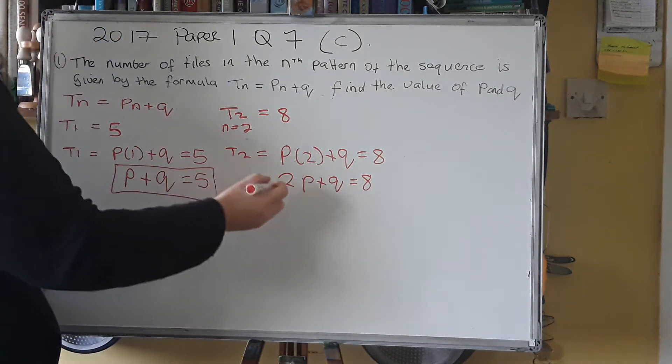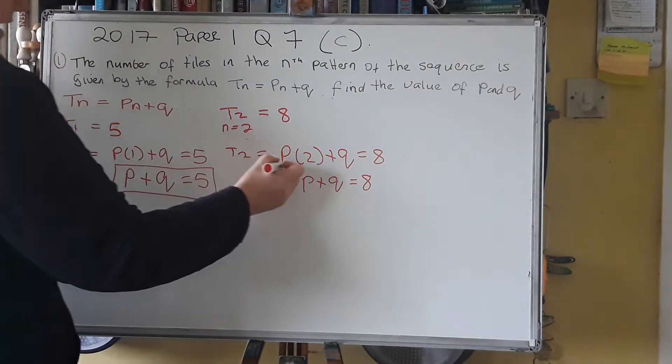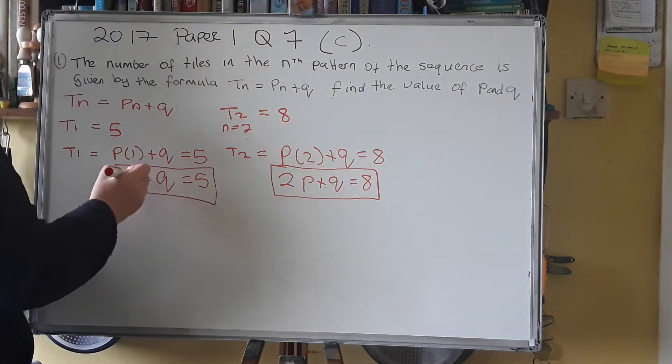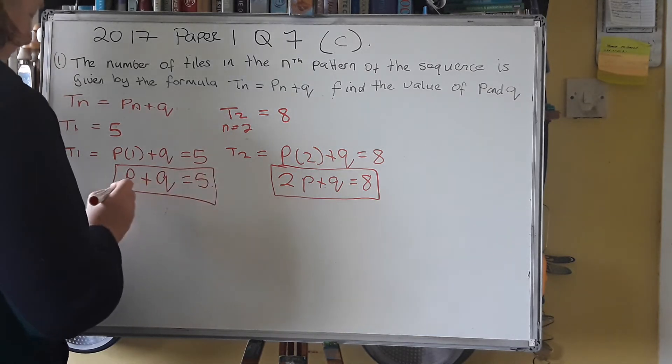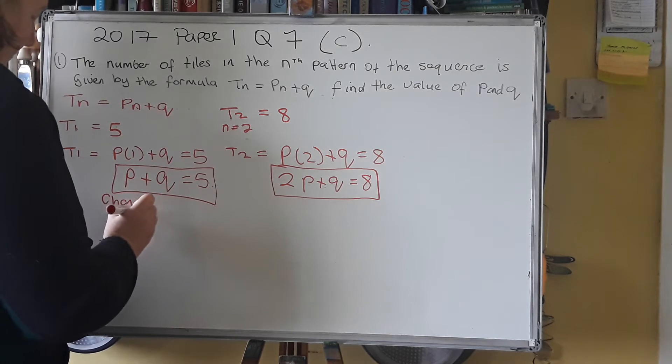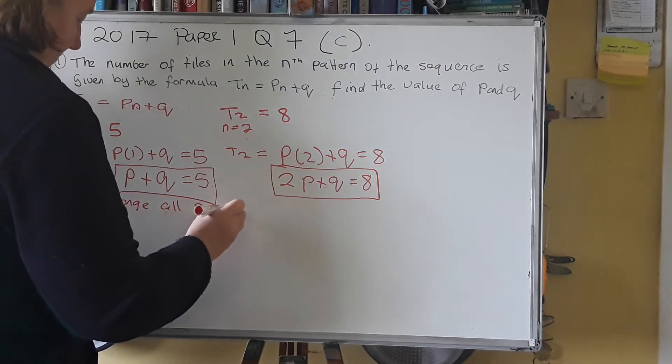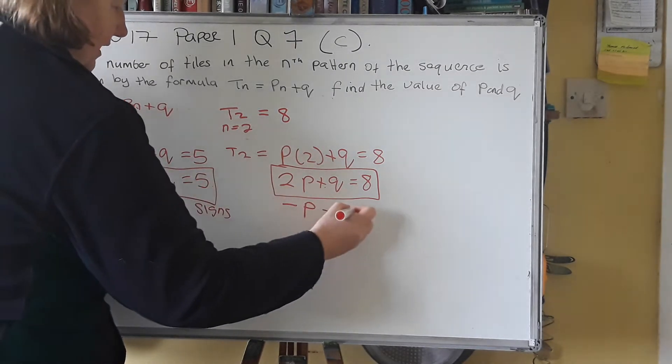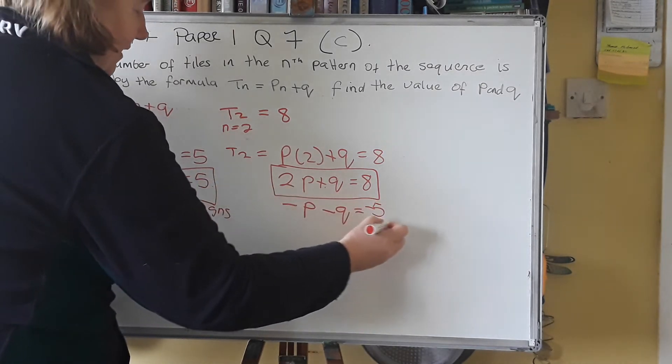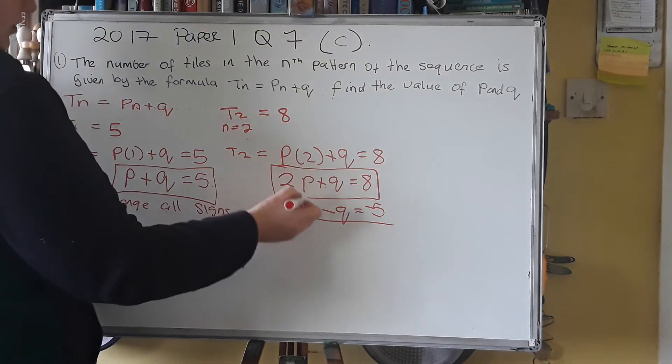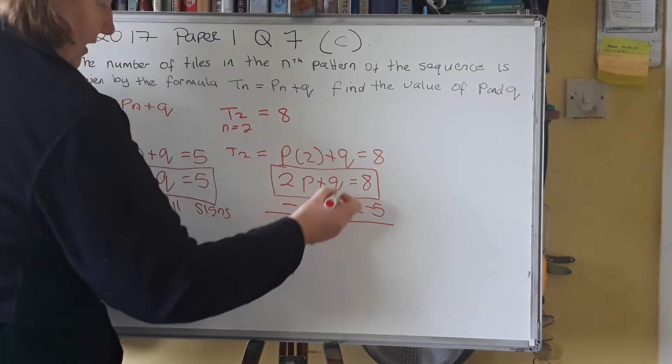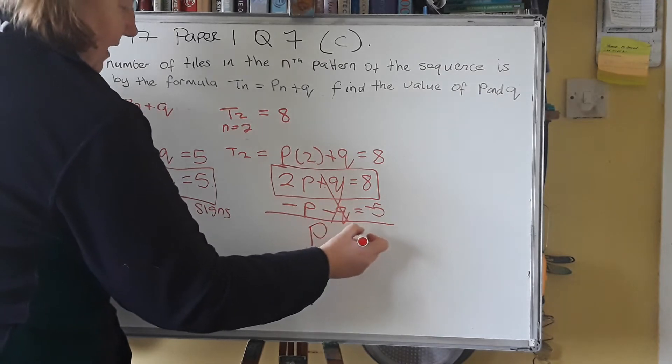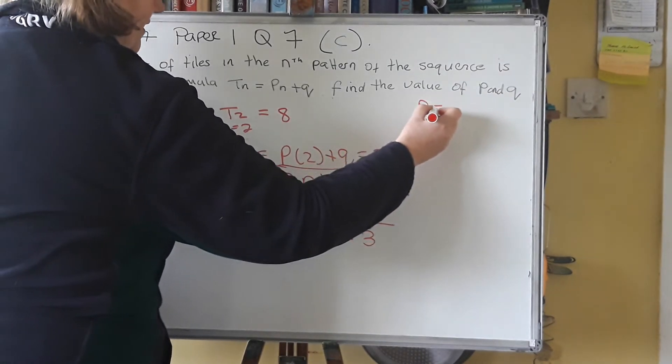Now I want to combine these, but I want to get rid of the Q's. So I have a plus Q there, and I have a plus Q here. So with this one here, the one that has no number with the P and has the smaller number here, I'm going to change all the signs. So P becomes minus P, Q becomes minus Q, and 5 becomes minus 5. Now I can put these two equations together. So 2P minus the P leaves you with 1P. These two Q's are gone. Q minus Q leaves you no Q's. And 8 minus 5 leaves you with 3. So now you know that P is 3.